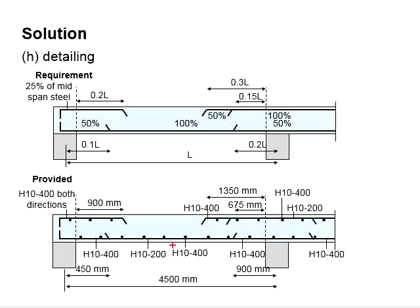The transverse reinforcement bar of H10-400 will be the same throughout the entire section. But for the main reinforcement bar of H10-200, it can be reduced to 50% at both ends and also at these regions. Therefore, you can reduce it by increasing the spacing to 400 mm for the H10 rebar.